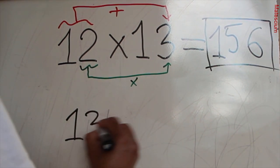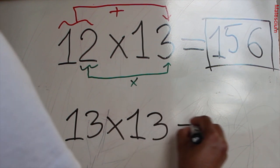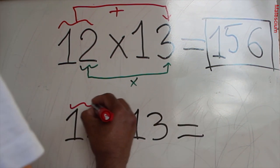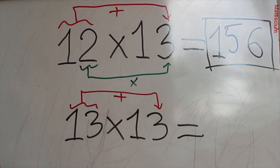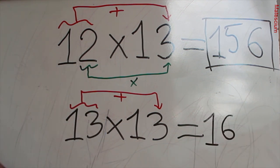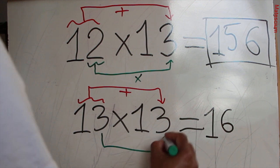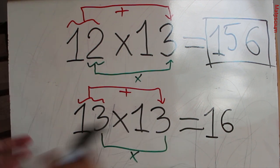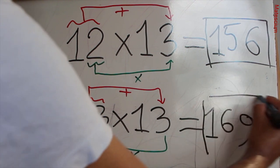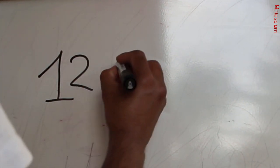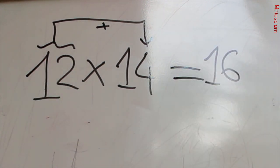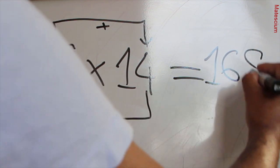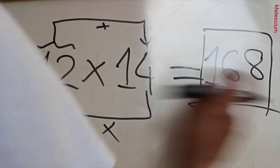Let's apply the same trick to 13 times 13. Add the first number with the last digit of the second: 13 plus 3 equals 16 — write 16 here. Multiply the second digit by that second digit: 3 times 3 equals 9. So 169 is the answer of 13 times 13. Another example: 12 times 14 — 12 plus 4 equals 16, and 2 times 4 is 8, so 168 is the answer of 12 times 14.